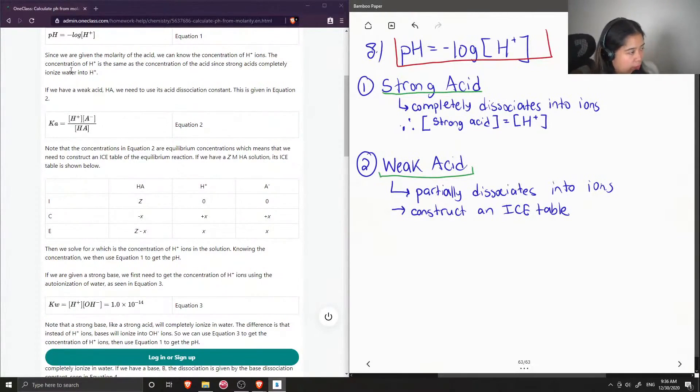We have a weak acid, so they denoted it as HA. We need to use its acid dissociation constant. This is given in equation 2. They showed how Ka is equal to concentration of H+ times concentration of A- over HA. Note that the concentrations in equation 2 are equilibrium concentrations, which means that we need to construct an ICE table for the equilibrium reaction.